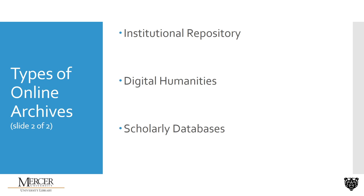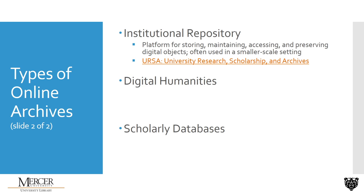Now let's move on to the next archive types. On this slide we have Institutional Repository, Digital Humanities, and Scholarly Databases. An Institutional Repository is really just a platform for storing, maintaining, accessing, and preserving digital or digitized objects. What makes these different is that they're usually on a smaller scale — just the institutional level. For example, a local historical group might have its own institutional repository. Also, universities usually have their own institutional repositories. Let's take a look at Mercer's own repository — it's called URSA.